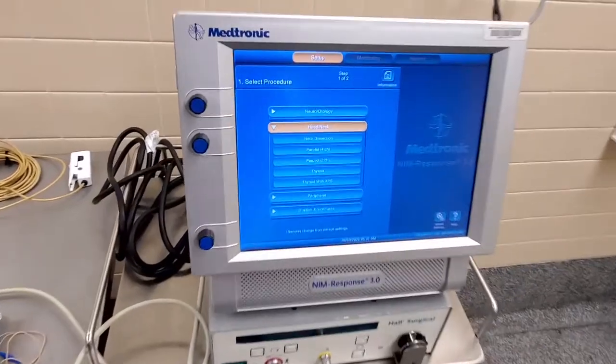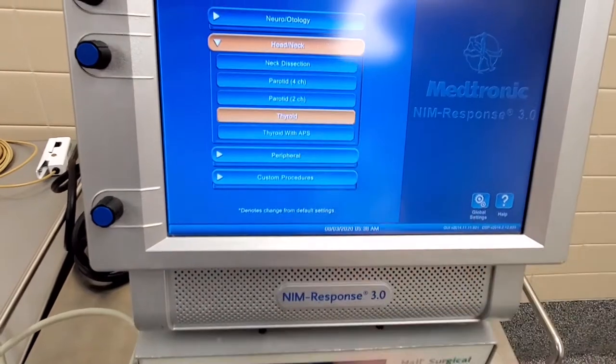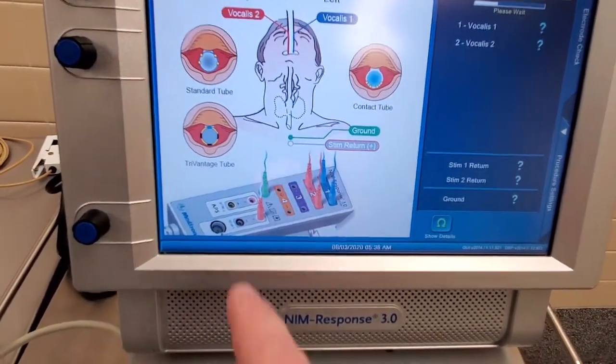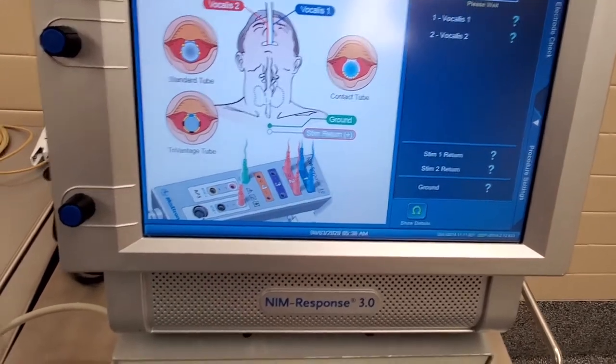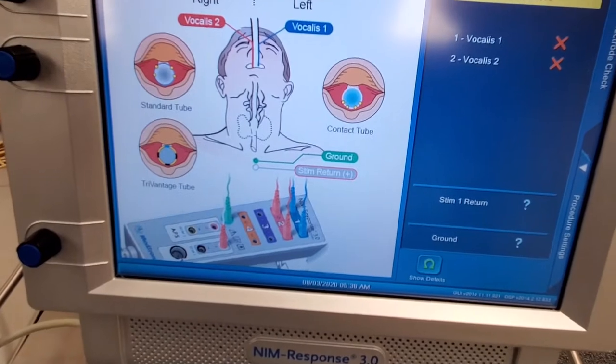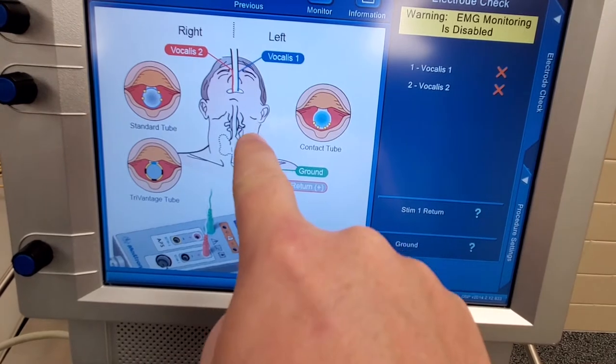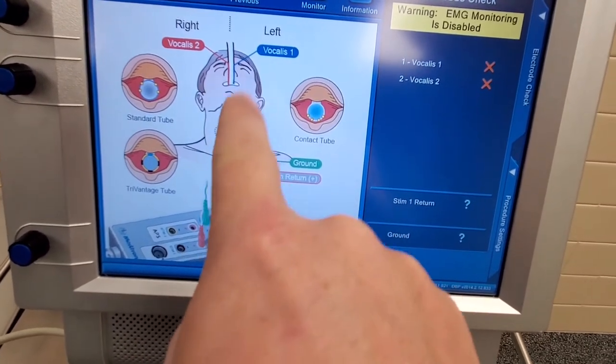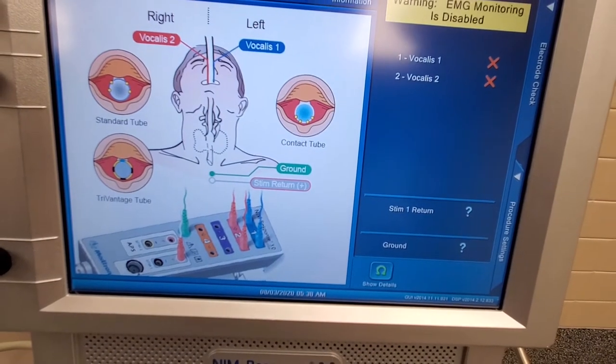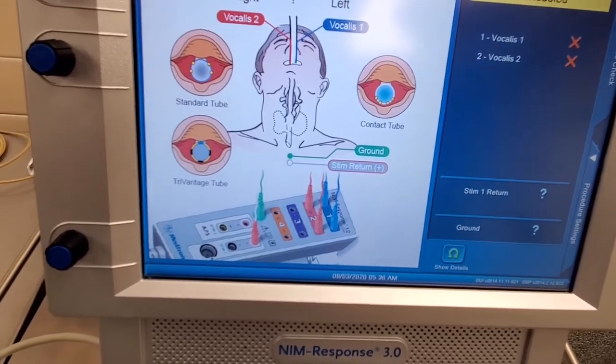You can see when you boot it up, there's a series of different pre-programmed cases. So let's do a thyroid. You can see here they show you a visual demonstration of what the pendant should look like and where you're going to place the nerve detections. Here they're using a very special endotracheal tube which has got the electrodes already implanted into the tube, so you just have to make sure that the tube is in the correct place and then it will pick up a signal.